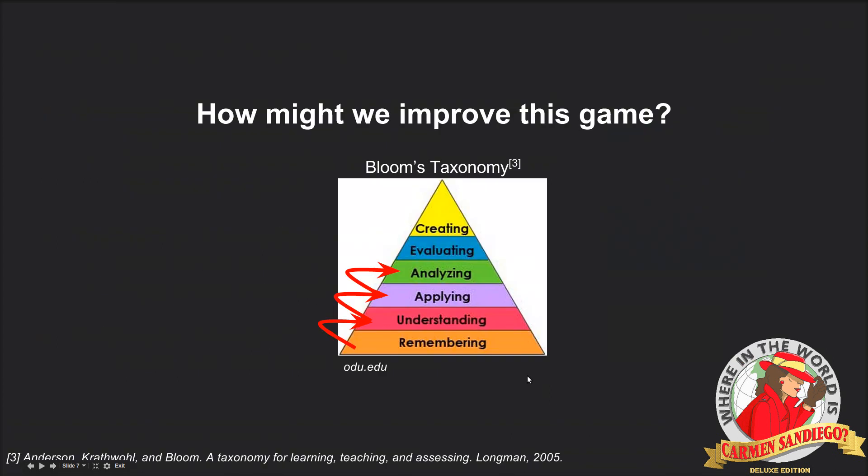So we've talked about how the game functions — how might we improve it? My goal here can be visualized as moving up the Bloom's Taxonomy pyramid. At the bottom of the pyramid, you're simply memorizing facts. At the top, you understand the domain so well that you can actually create new ideas from it. In order to achieve this, there are two redesign ideas.